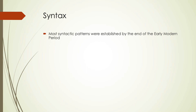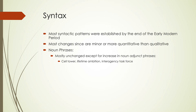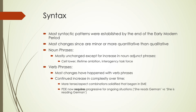For syntax, most syntactic patterns had already been established — changes are very minor and more quantitative than qualitative. Noun phrases haven't really changed much, except we've increased noun adjunct phrases: 'cell tower,' 'lifetime ambition,' etc. Verb phrases have changed by becoming more complex. We have more tense and aspect combinations solidified in usage than in early modern English, and we've separated progressive from other present tense by requiring progressive for ongoing situations. 'She reads German' versus 'she is reading German' mean two completely different things and can't be used interchangeably as they would have been in early modern English.